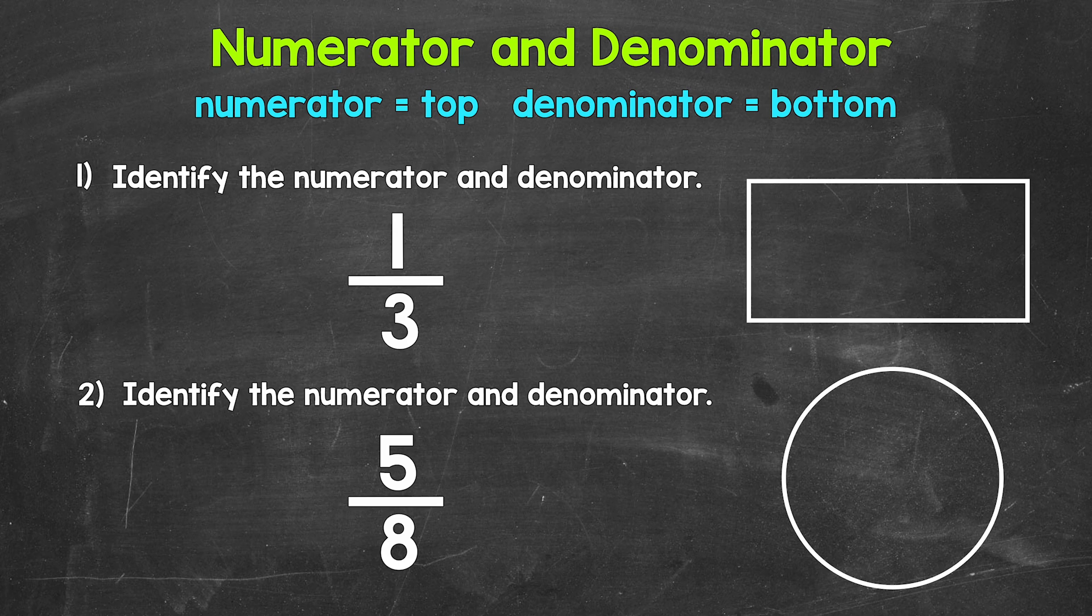Now simply put, the numerator is the top number of a fraction and the denominator is the bottom number of a fraction. But what do the numerator and denominator represent?